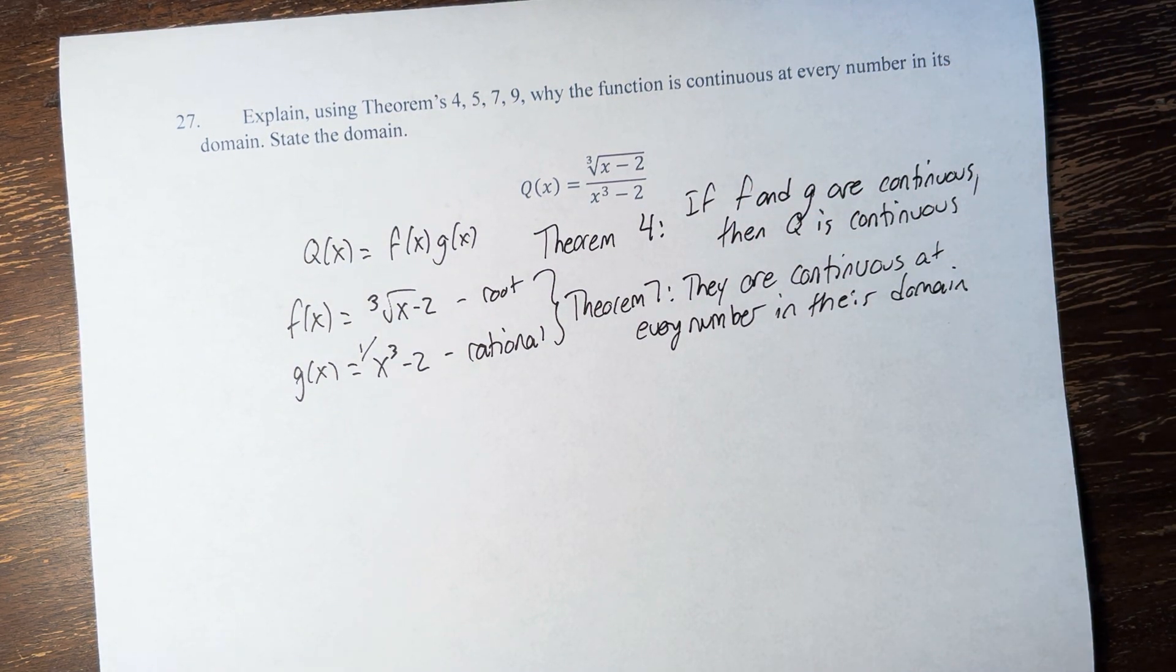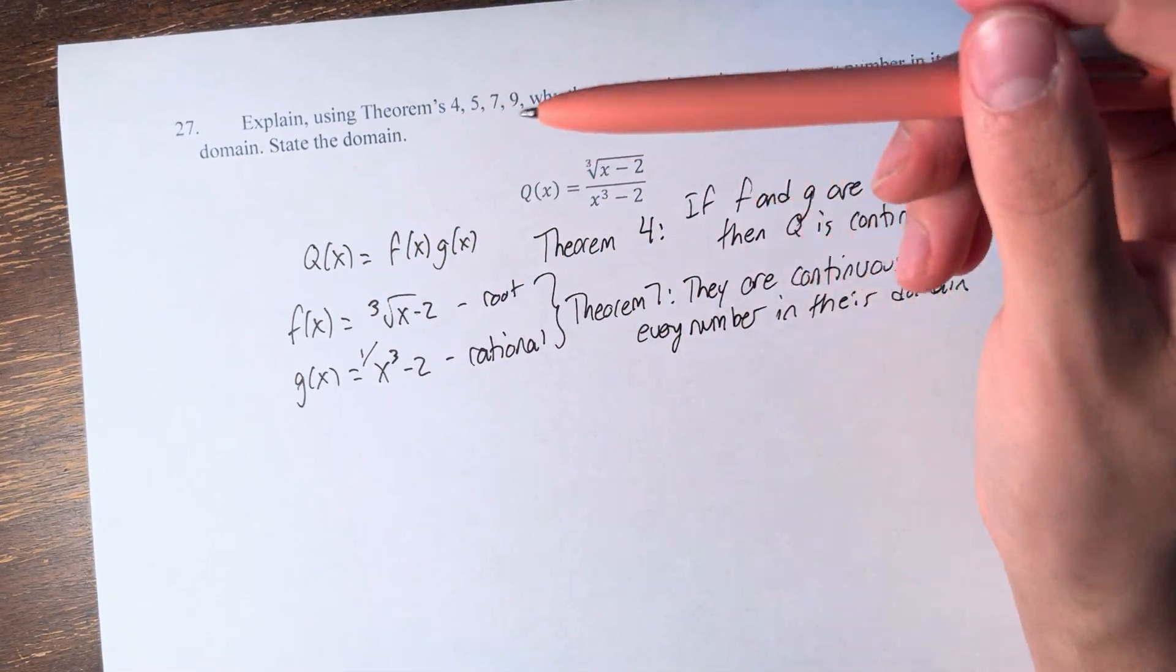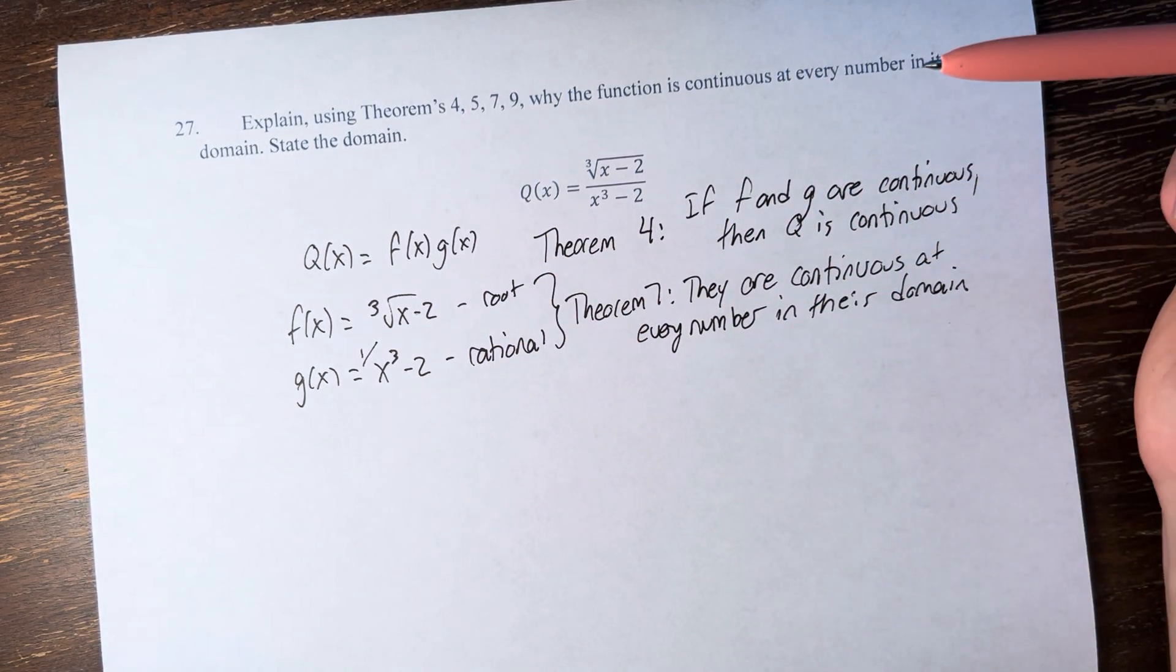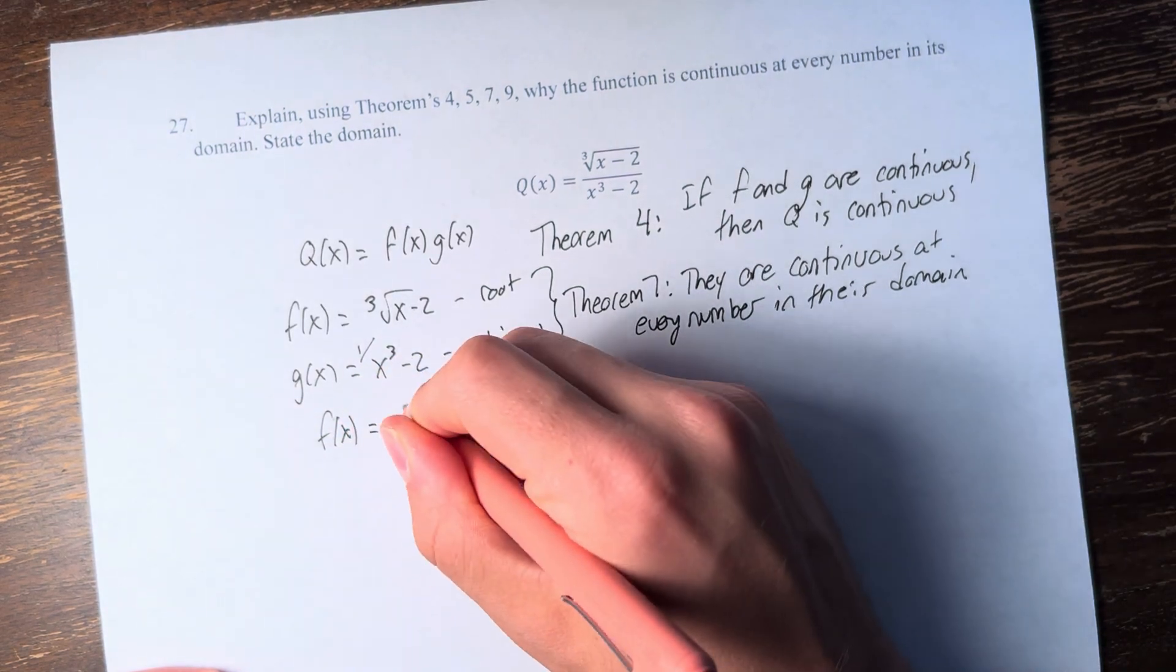And what are the domain restrictions? Well, for the root function, the cube root of x minus 2, this is an odd root, so there are no domain restrictions. You can't take the square root of a negative number, but you can take the cube root of a negative number. So f of x is just all real numbers.